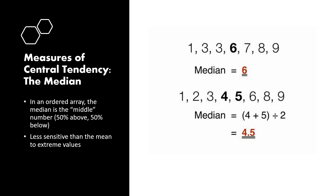The second measure of central tendency is the median. To calculate the median, we first need to arrange data in numerical order from lowest to highest. There are two rules: for odd numbers — for example, if we have seven digits — we look at the central value. In the first example with seven values, the median is the middle value, which is six.